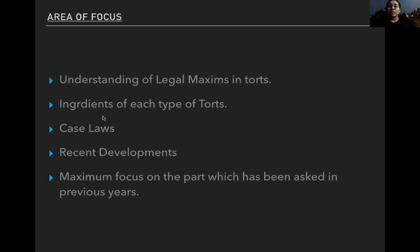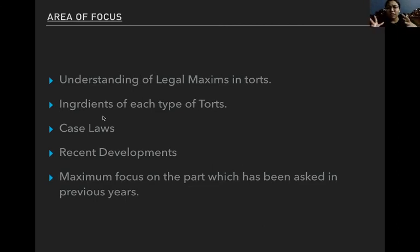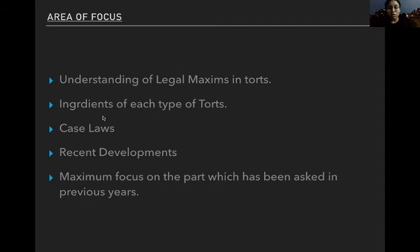Next we'll talk about the ingredients of each and every type of tort. In torts, many wrongs are very similar to each other — you may not be able to differentiate between strict liability and absolute liability, or between nuisance and negligence. So we'll try to understand what specific elements are necessary for a particular wrong — for example, what conditions must be present for something to be called nuisance. These are called the ingredients of each tort, and by understanding them we'll be able to differentiate between different kinds of torts.